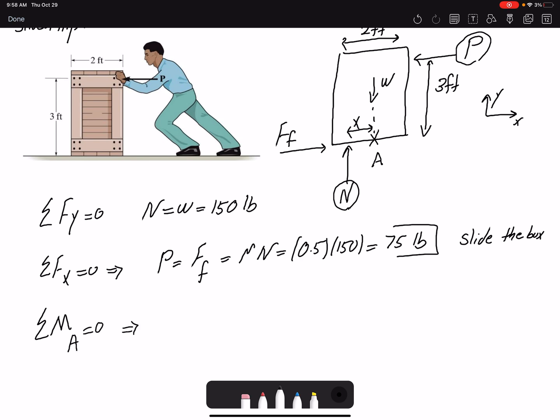So if I write the summation of moment about that point equals zero, the moment of force P would be 3 and the moment for force N would be Nx. So in this I have already found P, so 75, and I already know N which is 150. So what would be the value of x? 3 times 75 over 150, so that would be 1.5 meter.